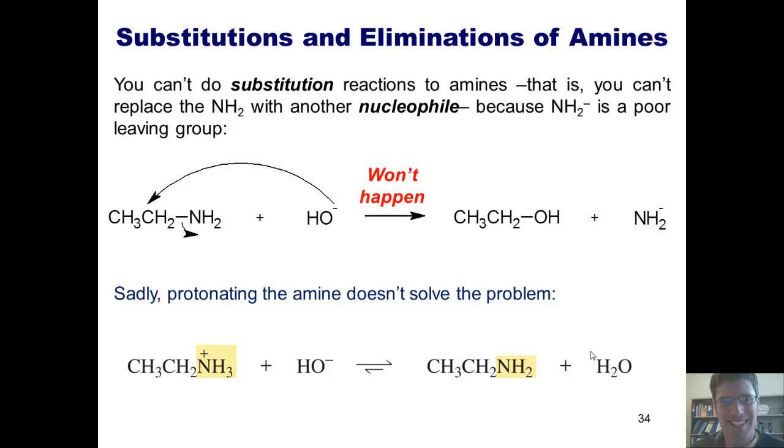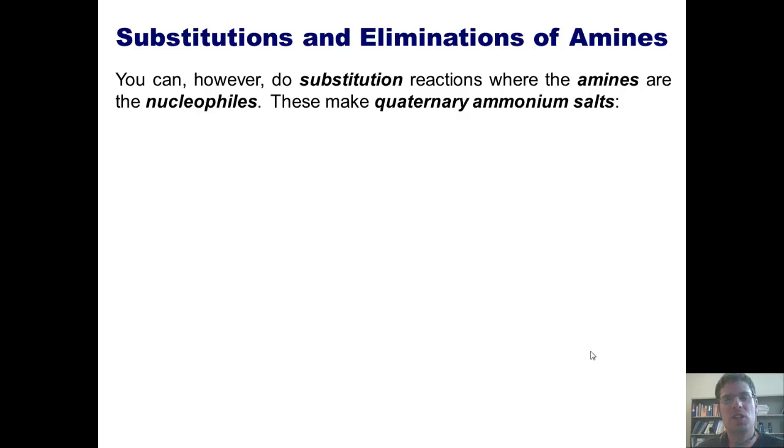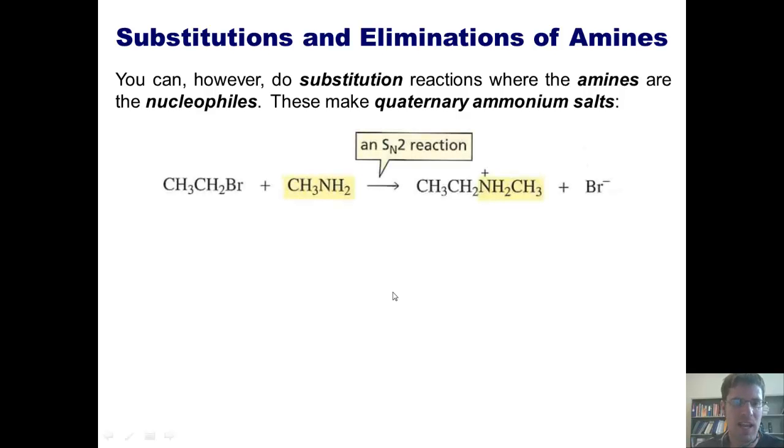Well, the answer is yes. You can do substitution reactions where the amines are the nucleophiles. For instance, if I take a very simple amine like this molecule and treat it with an alkyl halide, such as this alkyl bromide, the lone pairs on the nitrogen will come over, form a bond with this carbon, and kick off the bromide to give me this type of intermediate.